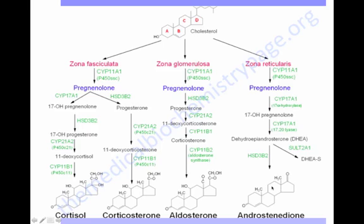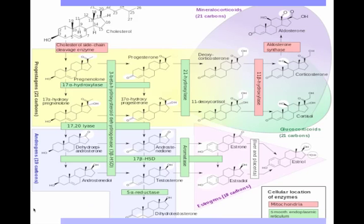Androstenedione is an intermediate to the androgens testosterone and estrogens estrone and estradiol. Steroidogenesis does not stop with the production of just these adrenal steroid hormones; there are many more outcomes. As seen in this diagram, there are many other pathways that can be taken by cholesterol in order to perform many different functions.